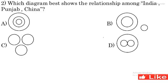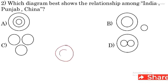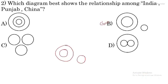Question 2: Which diagram best shows the relationship among women, doctors and anchors? Now, India mein Punjab hai — India is a big circle and Punjab is a small circle inside it. But China is a different country, so it is a separate circle. So B option is the correct option for this question.